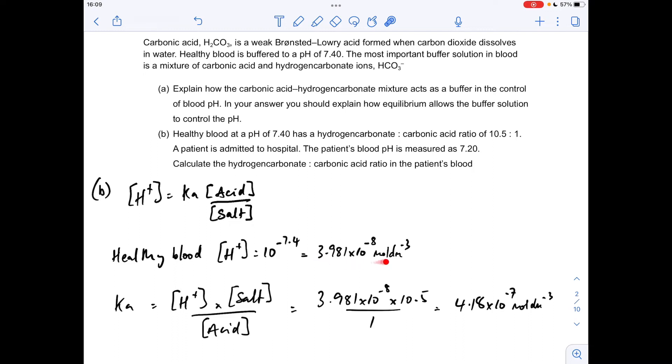If we rearrange the cassadova salt expression for Ka, it rearranges to H+ concentration times the salt concentration divided by the acid concentration. Feed the numbers in, and we get the Ka for healthy blood.